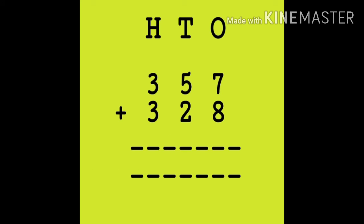Here, H-T-O means hundreds, tens, and ones. In the first number 357: 7 will be placed at the ones place, 5 will be placed at the tens place, and 3 will be placed at the hundreds place. Same with the second number 328: 8 at the ones place, 2 at the tens place, and 3 at the hundreds place.